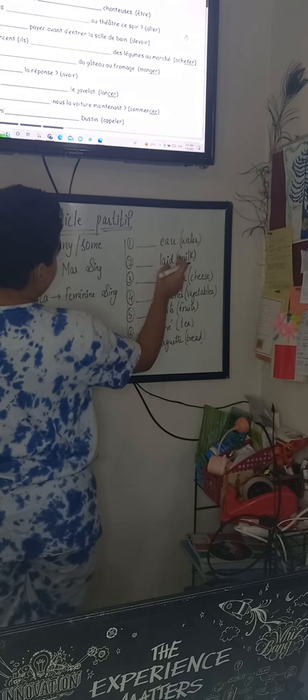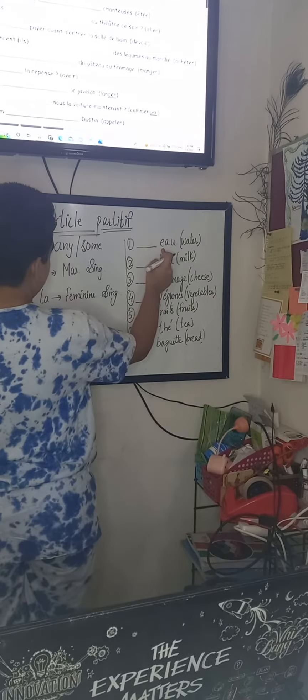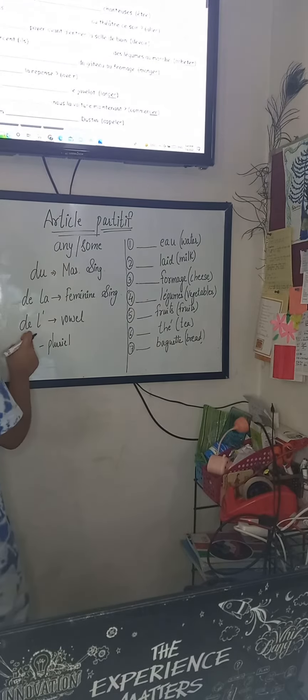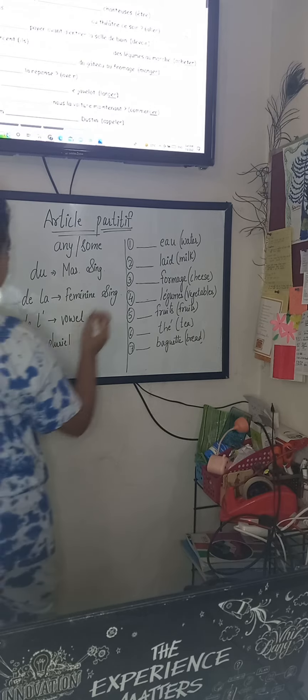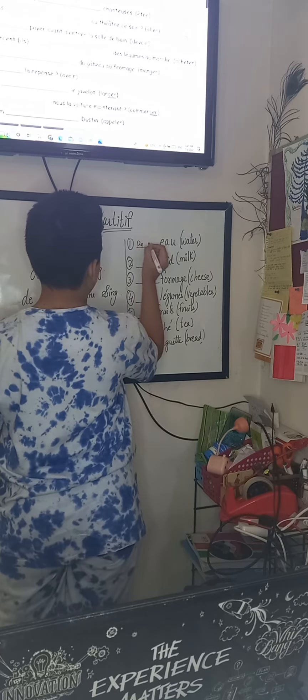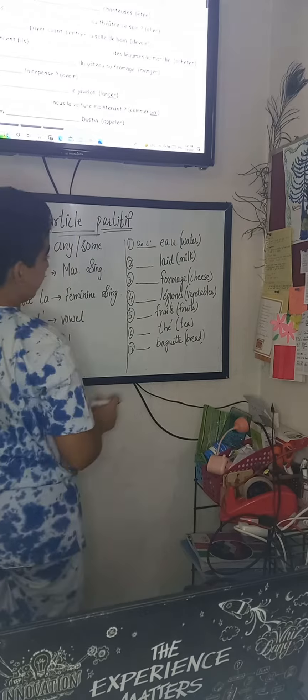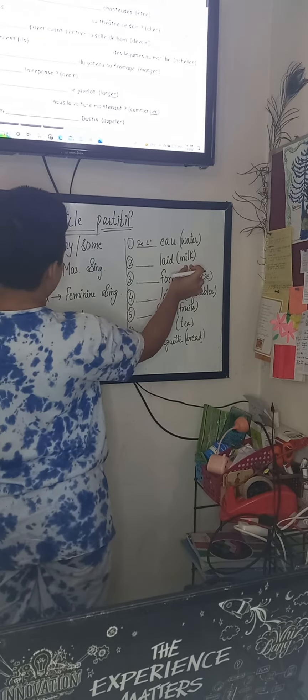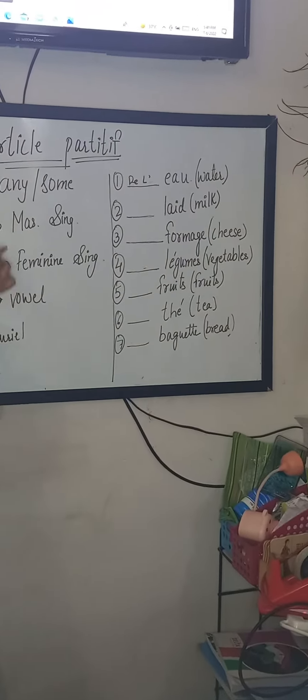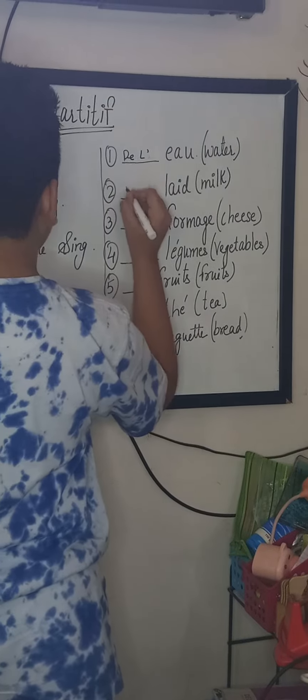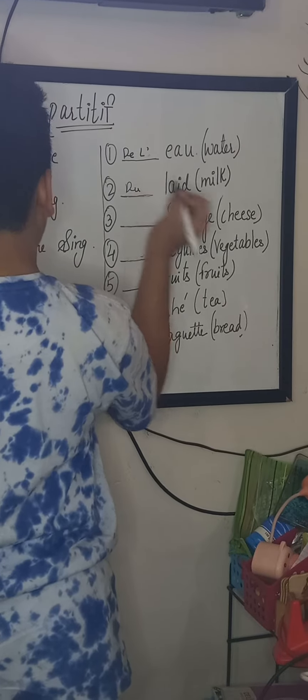Eau, that means water. E is a vowel, so it would be de l'apostrophe eau. Du lait, that means milk is masculine, so it would be du.